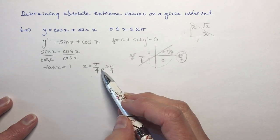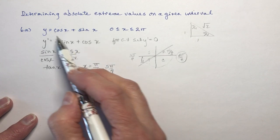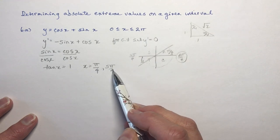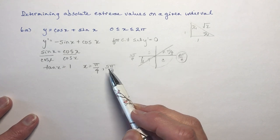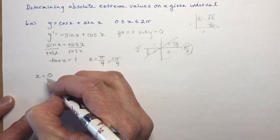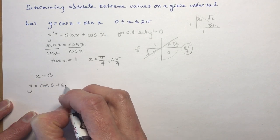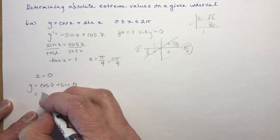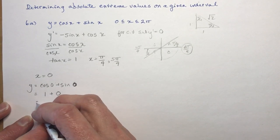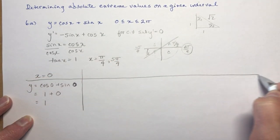Now that I know two places where this would be a critical value — π over 4 and 5π over 4 — I need to go back and check the original function. I need to check the endpoints and each of these critical values to find which gives a maximum or minimum on the interval. Starting with x equals 0: y equals cos 0 plus sin 0, which is 1 plus 0, giving me 1.